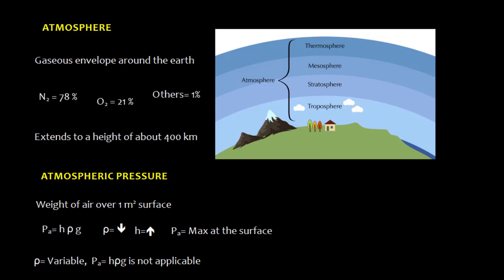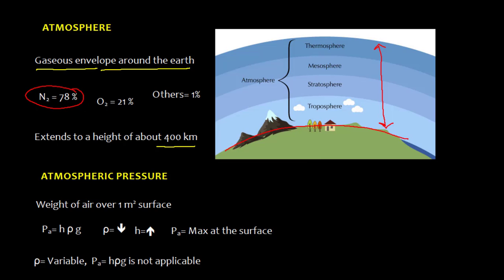Let's talk about atmosphere. The gaseous envelope around the earth is called atmosphere. The earth's atmosphere extends to a height of about 400 km from the surface of earth. The atmosphere mainly contains nitrogen, that is around 78%, and oxygen, that is around 21%, making a total of 99%. The rest of the gases are 1%, which mainly include carbon dioxide, neon, water vapor, dust particles, etc.